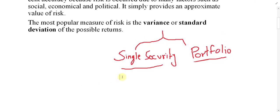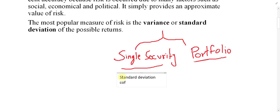If it is a single security, you can use one of two techniques. The first technique is standard deviation. The second technique is coefficient of variation. There are several other techniques, but for your bachelor level and according to this course, these two — standard deviation and coefficient of variation — are the focus.